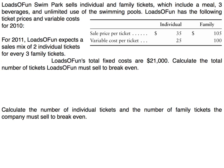Let's jump right in with an example. Loads of Fun swim park sells individual and family tickets, which include a meal, three beverages, and unlimited use of the swimming pools. They have specific ticket prices and variable costs. Loads of Fun expects a sales mix of two individual tickets for every three family tickets. Total fixed costs are $21,000. We need to calculate the total number of tickets to break even, and then the number of individual tickets and family tickets the company must sell to break even.